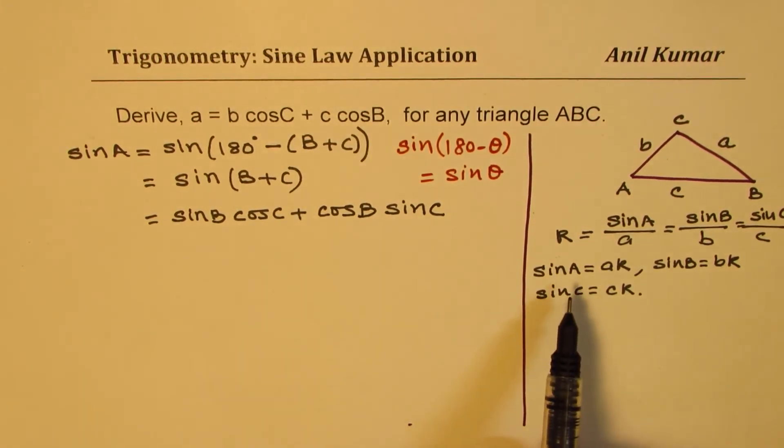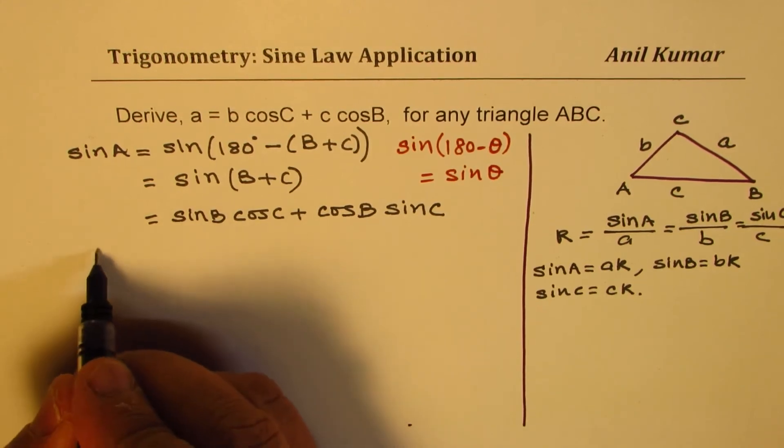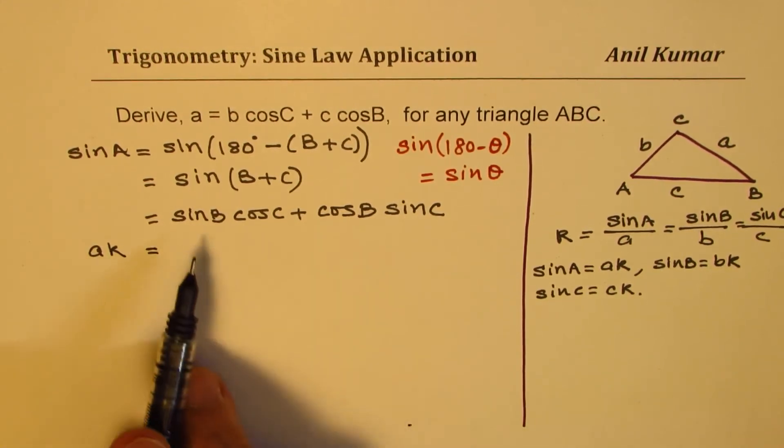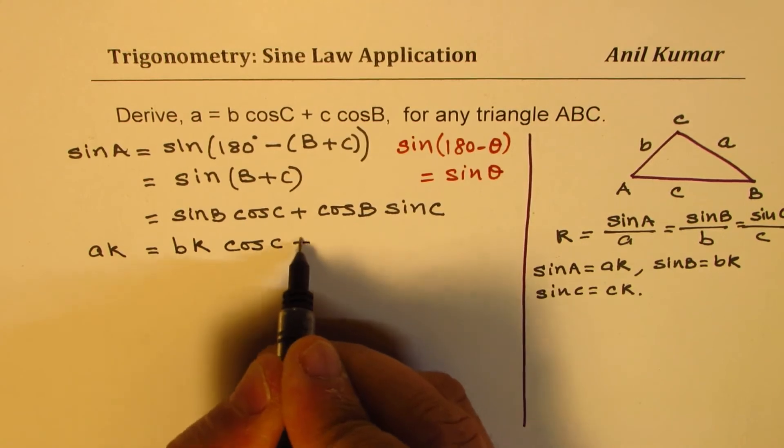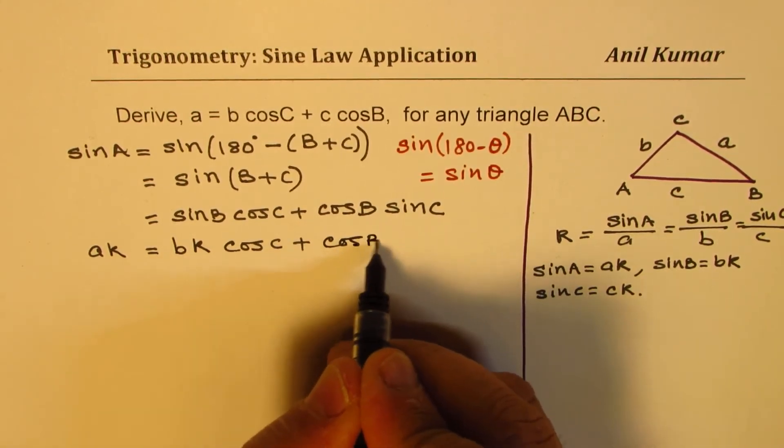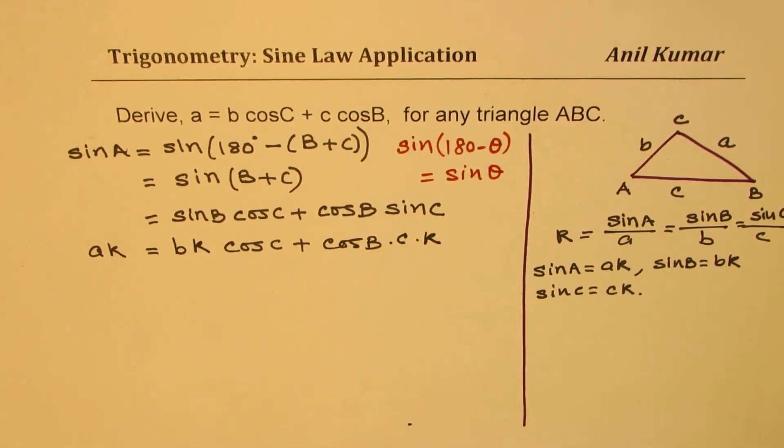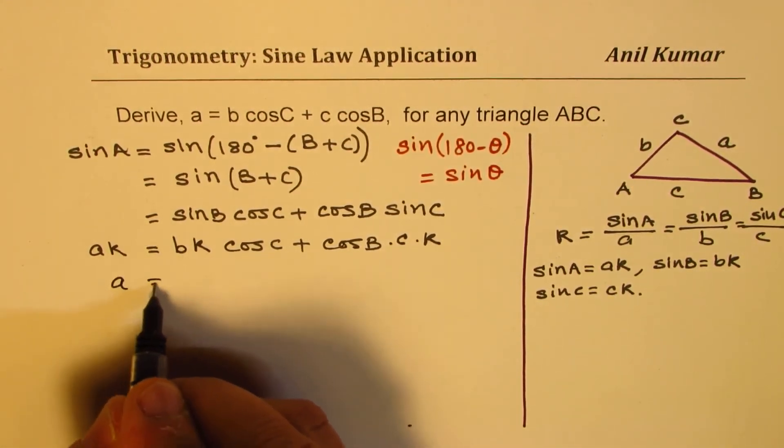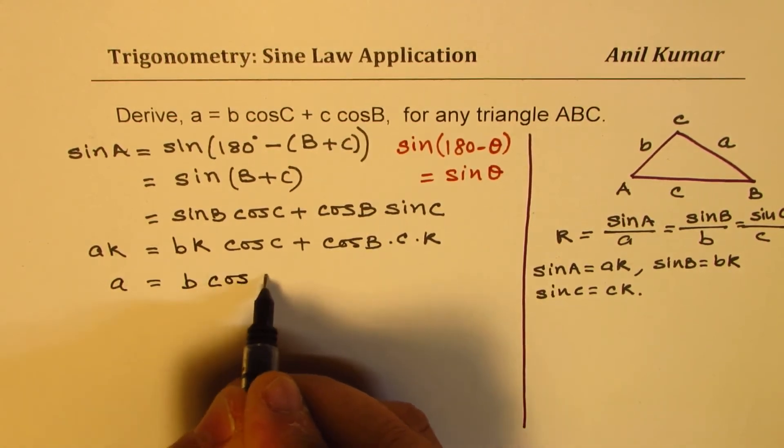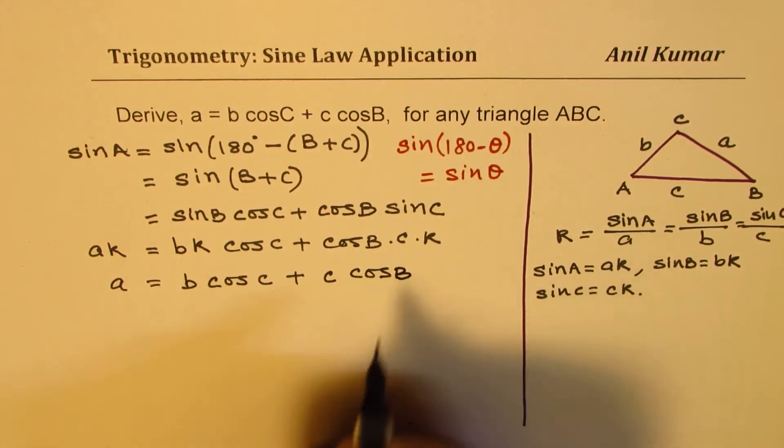Now, if you look at what we derived from sine law, sine A is a times a constant. So I can replace this sine A with a times a constant. So I can write this as a times some constant equals to sine B is b times a constant, so b times a constant. We have cos C here plus cos B. And sine C is c times a constant K. So that means the constants can cancel. So we could write this as a equals to b cos C plus c cos B.